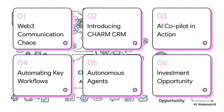All right, so here's what we're going to cover. First, we'll dig into the problem — that communication chaos in Web3. Then we'll introduce Charm and see how it's designed to fix it. After that, the fun part: we'll see its AI co-pilot in action, look at how it automates workflows, and then talk about the bigger vision for the future.